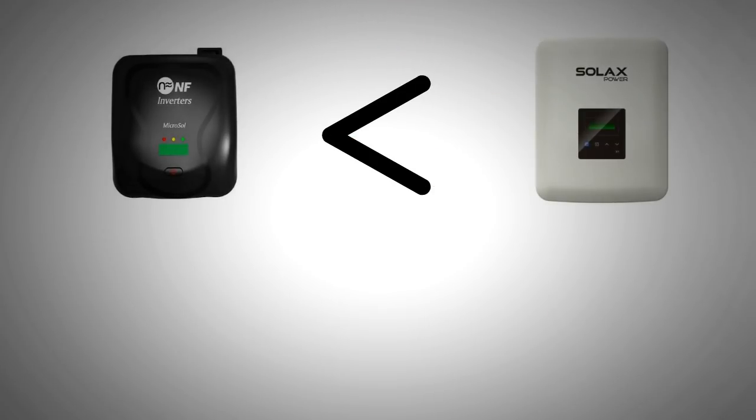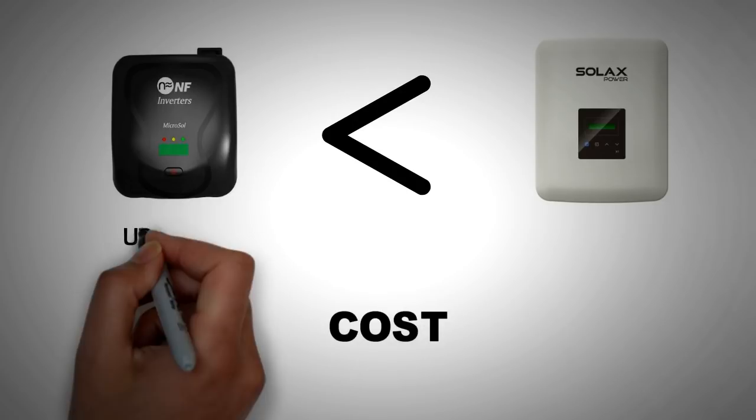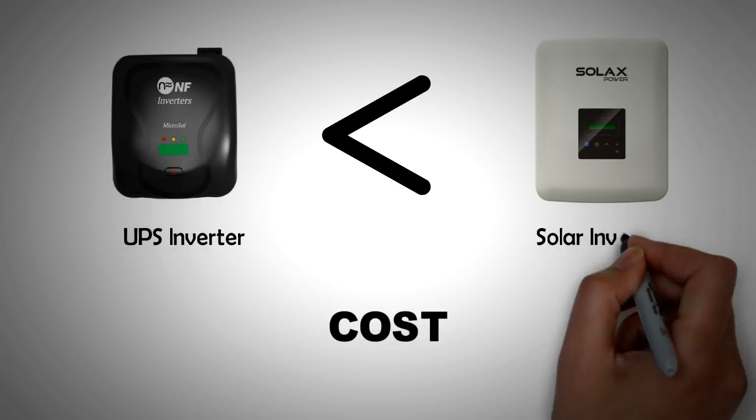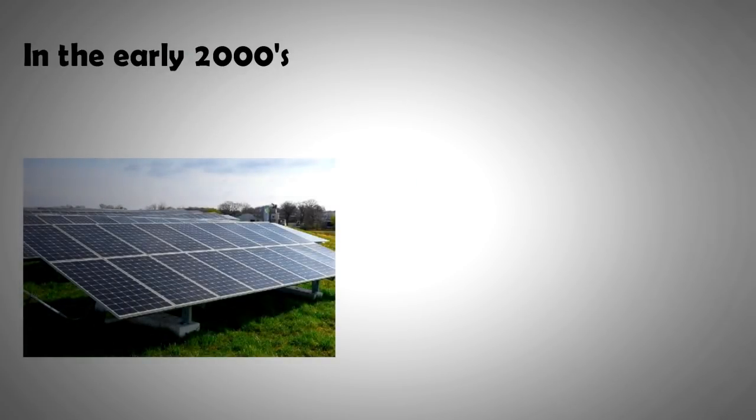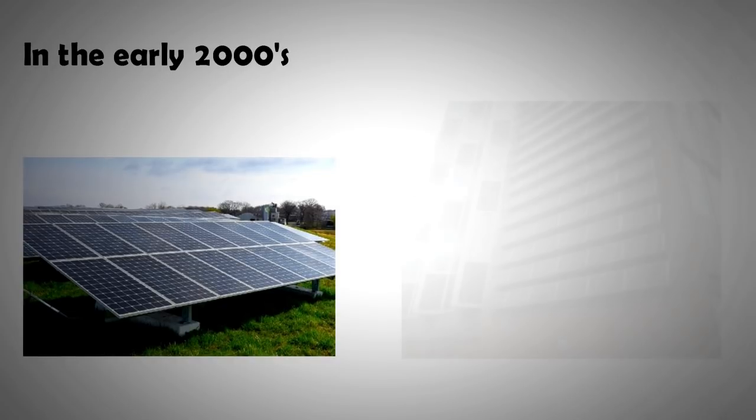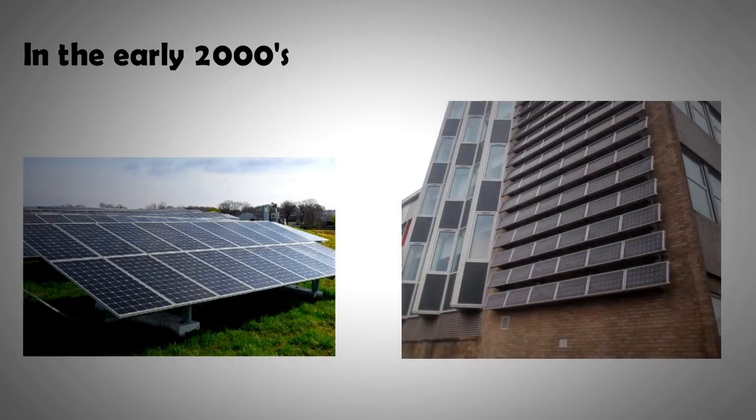Even today, many UPS inverters are still used for solar installations in the developing world as they cost very little compared to purpose-built solar inverters. Going back to early 2000, the solar installations were mainly commercial and utility scale. There were high-tech commercial solar inverters in the market that were being made by a handful of companies.